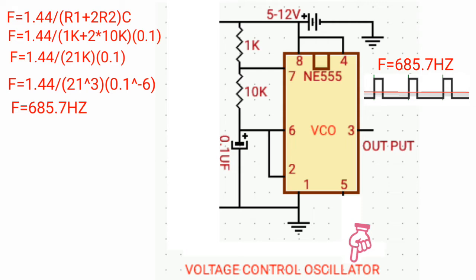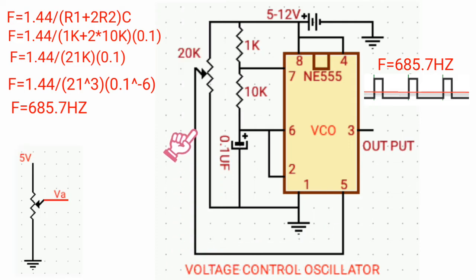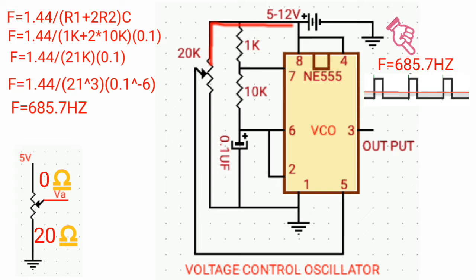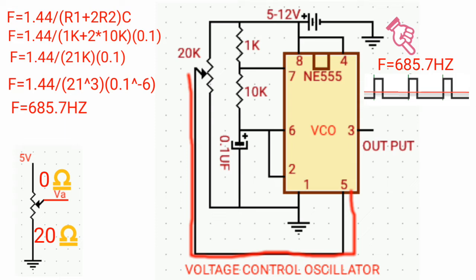Even though the circuit is a VCO — voltage controlled oscillator — and the potentiometer is adjusted to 0 ohms, the frequency is still 685.7 hertz. As you can see, the variable resistor has one side connected to the positive rail and the opposite side connected to ground, and the middle pin will be connected to pin 5, which is the control voltage.